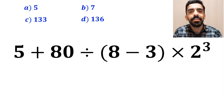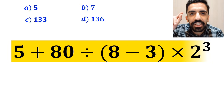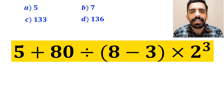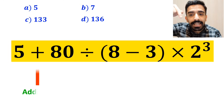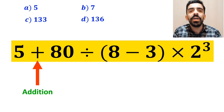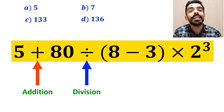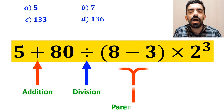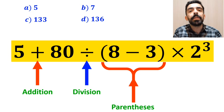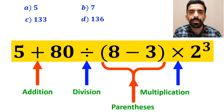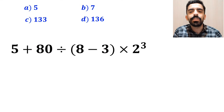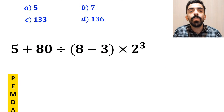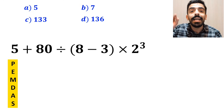Now let me show you how to solve this expression properly. As you can see on the screen, in this expression, first we have an addition sign, then a division sign, followed by parenthesis, then a multiplication, and finally an exponent. To solve this question, we must follow the PEMDAS rule.